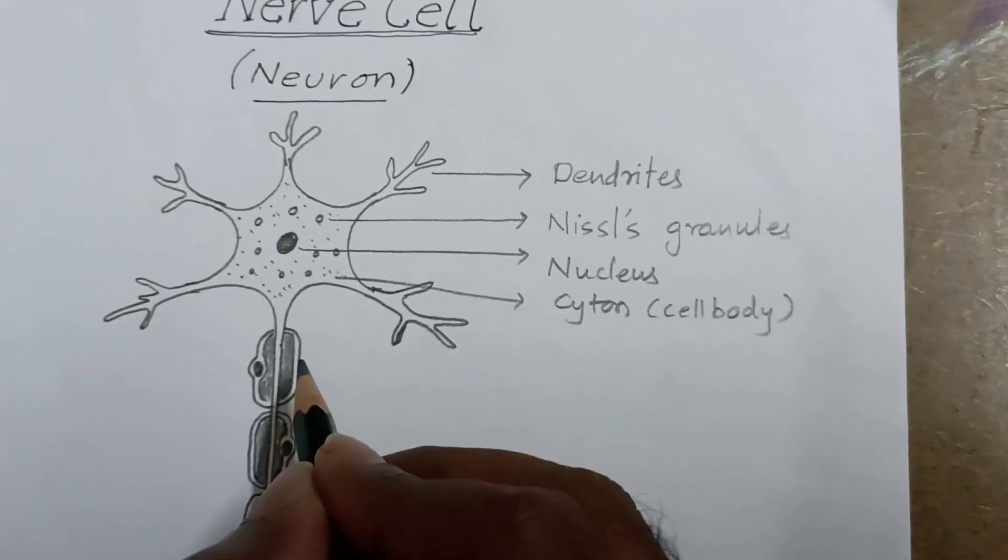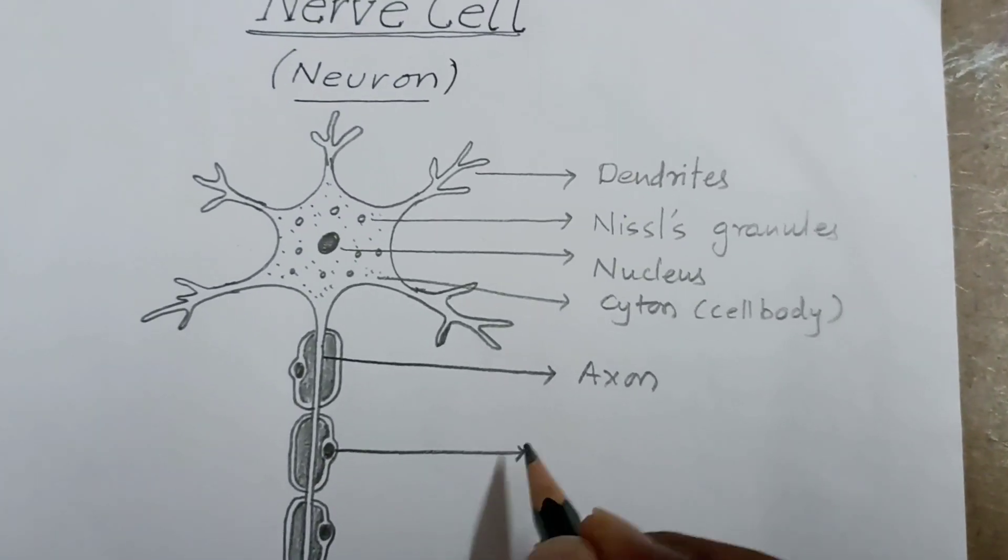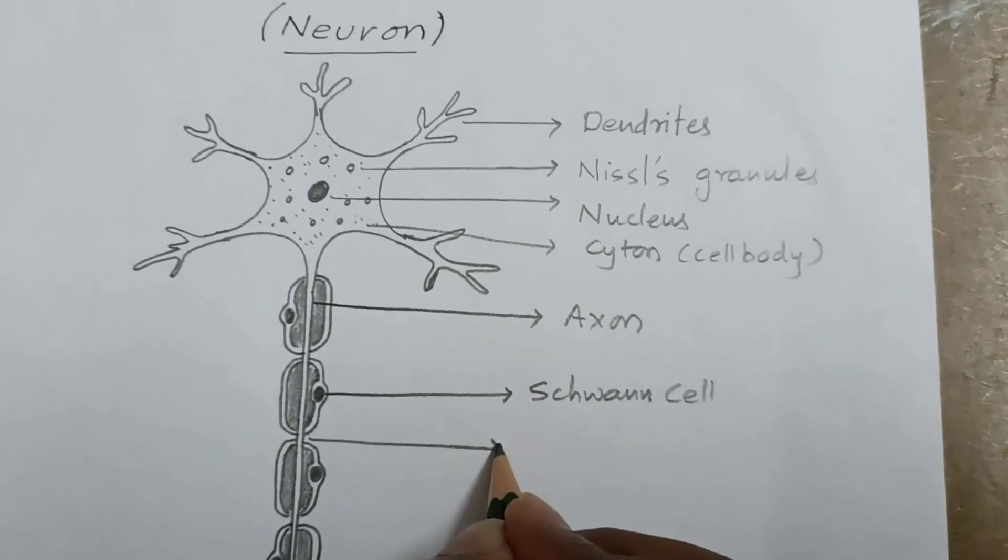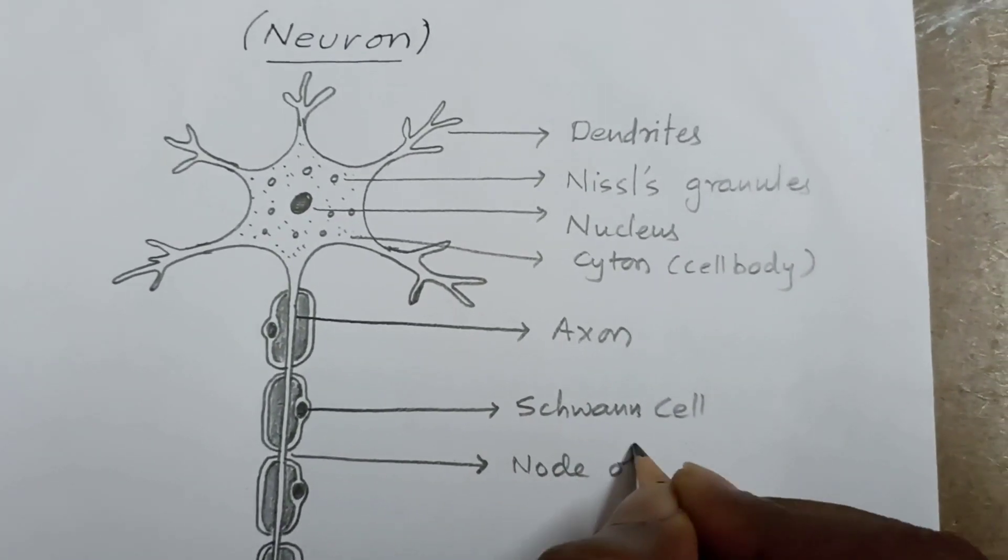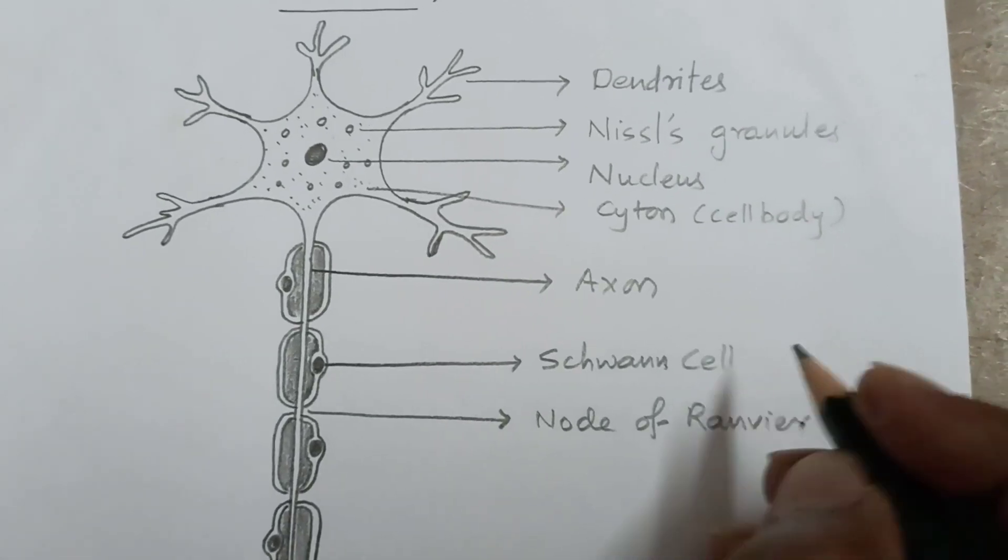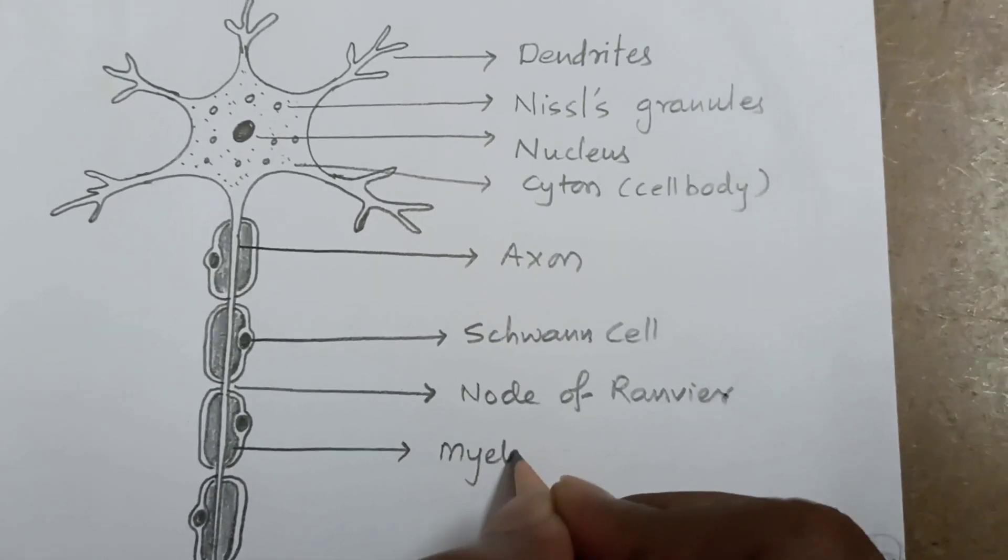This is axon. These are Schwann cells, this is node of Ranvier, the gap between myelin sheath. This is myelin sheath.